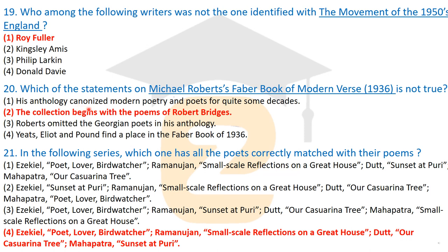Question twenty-one: which option has all poets correctly matched with their poems? The correct answer includes: Ezekiel's 'Poet, Lover, Birdwatcher'; Ramanujan's 'Small Scale Reflections on a Great House'; Daruwalla's 'Kunjurina Tree'; and Mahapatra's 'Sunset at Puri.' These are the correctly matched poets and their works — all other pairings in the options are incorrect.